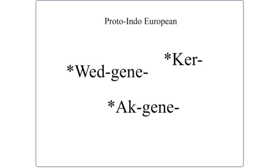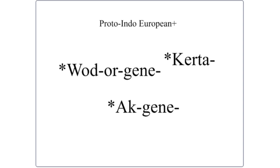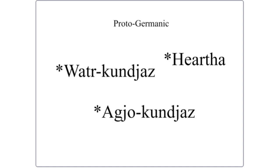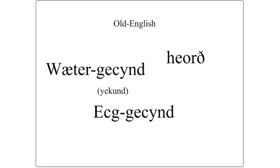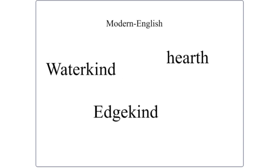To summarize the full evolution: Proto-Indo-European *wodorgeni*, *kerta*, *akgeni* → Proto-Germanic *watrkundiaz*, *hertha*, *agyokundiaz* → Old English *water yekundiaz*, *hiorth*, *edgyekund* → Modern English *water kind*, *herth*, and *edge kind*. I think that's pretty cool.